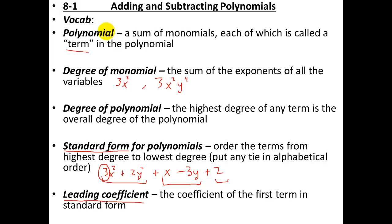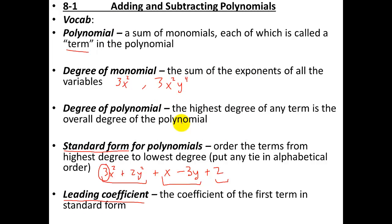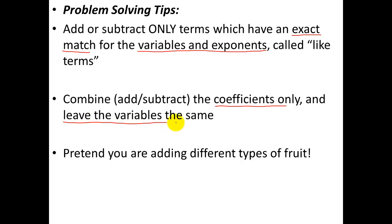These are just some vocabulary to be aware of — when we're talking about polynomials, if I say what's the leading coefficient, what's the degree of this polynomial, or put it in standard form. Now, problem-solving tips focused specifically on adding and subtracting: you can only add or subtract terms which have exact matches for variables and exponents. These are called like terms. When you have like terms, the coefficient — which tells you how many you have — is the part that you add or subtract, and you always leave the variables the same when adding or subtracting.